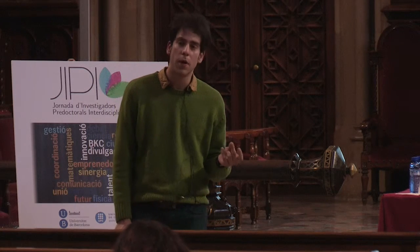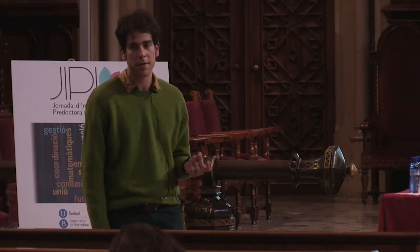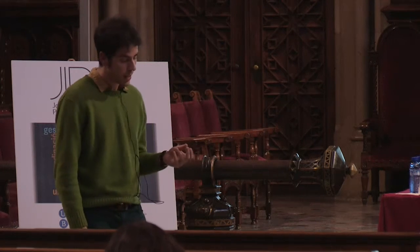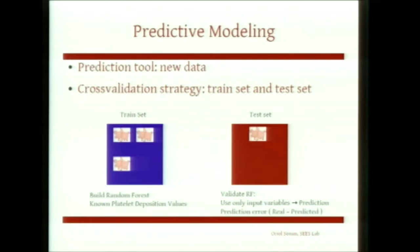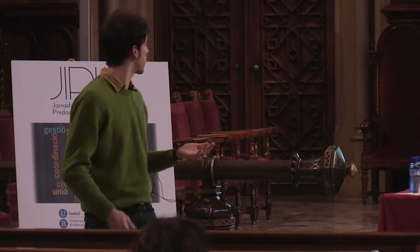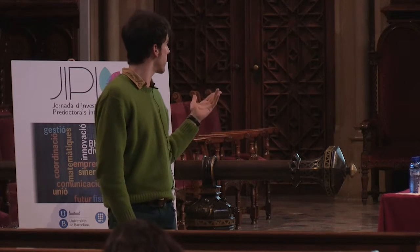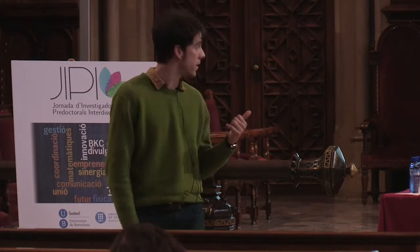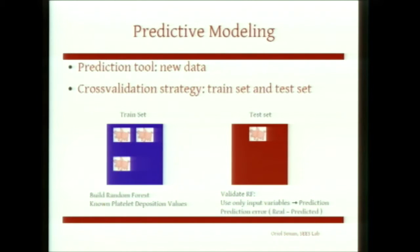We have the model. Now we need a strategy to test and validate how good this model is for predictions. A good strategy cannot use the same data we used for building the model for testing the prediction — we have to use new data because we want to test new experiments. So what we do is a cross-validation strategy. We have two datasets: the first is called TrainSet, the dataset we use to train the random forest — in our case, three pigs. The remaining one we use to test the prediction error of our model, and we call it TestSet.